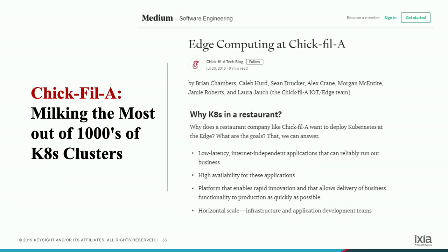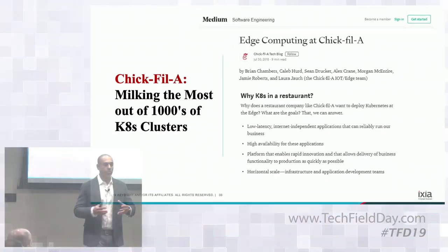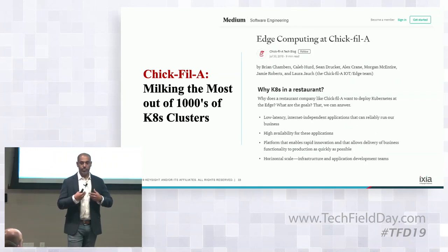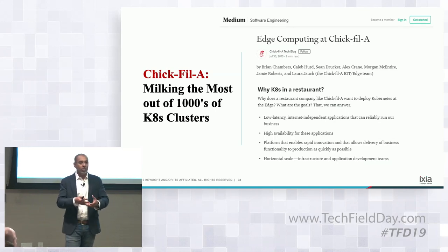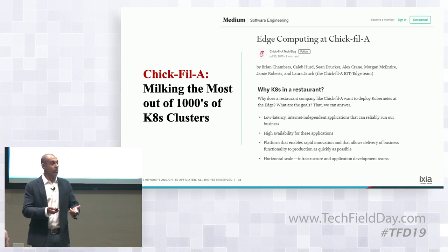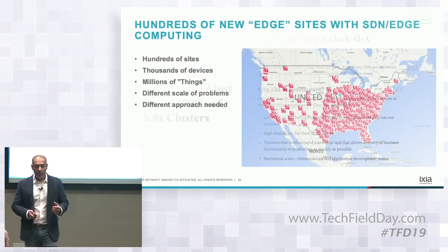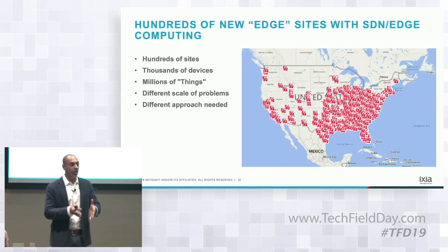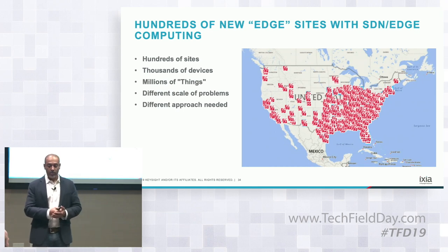They wanted to have some of the principles of cloud computing available at the storefront, so they have high availability, mini services, and make use of enterprise technologies like Kubernetes and Docker containers to build out applications. When you walk in, you're actually being serviced by a pretty well-built edge platform whose intention is to serve you fast food. And if you want to monitor those sites — which are your bread and butter — that's important.